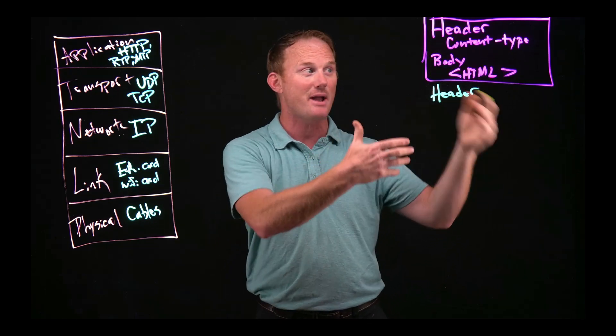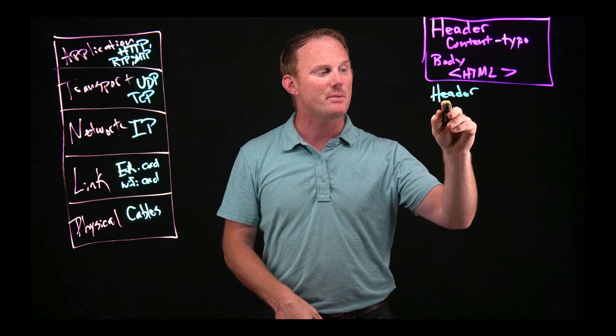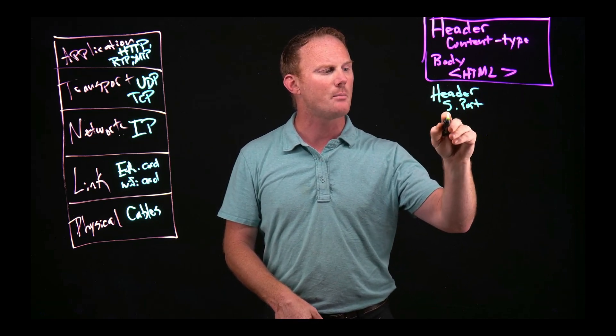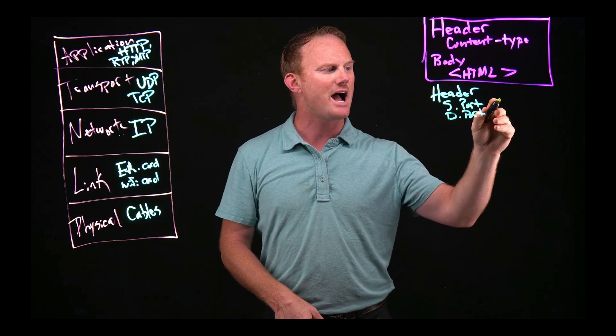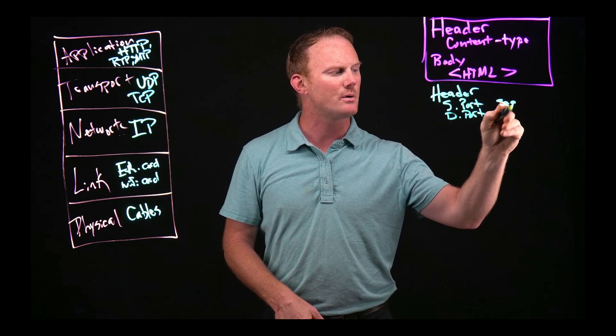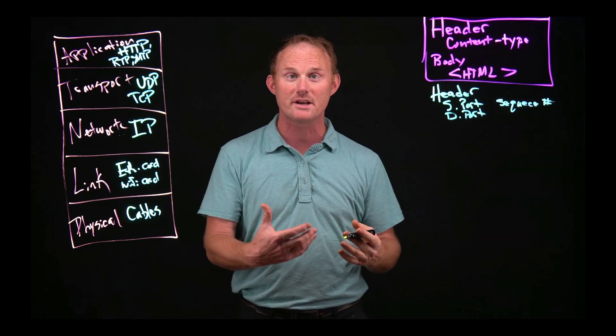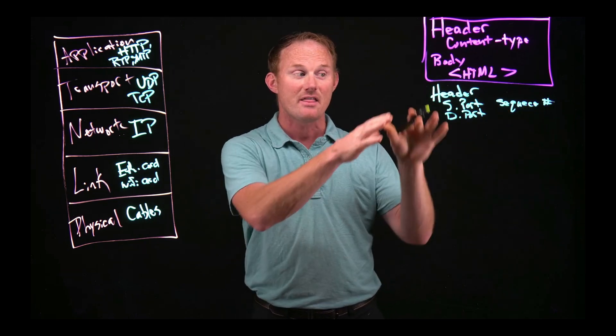And that header, as opposed to content type, HTML or whatever, it might be the source port. So what port did it come from? Maybe it also has the destination port. It will have like a sequence number because TCP guarantees order. So it needs to know what order it is in the list of packets. That's the header.